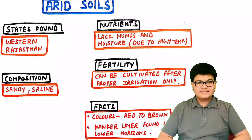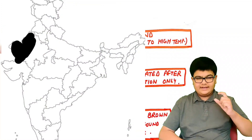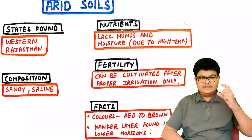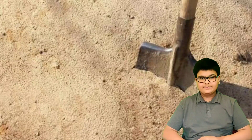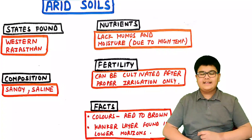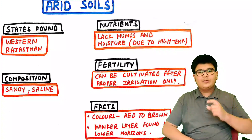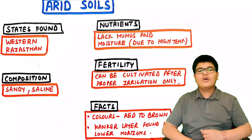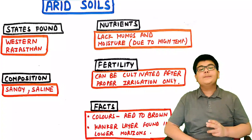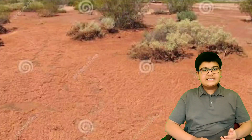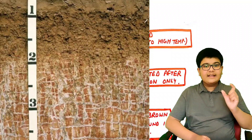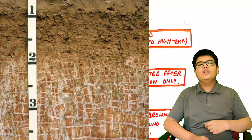Arid soils are found in the region of Western Rajasthan. Their composition is very sandy due to the presence of sand dunes. A large amount of salt is present, making them highly saline. Due to the high rate of evaporation, they lack humus and moisture and can be cultivated only after proper irrigation. They come in colors such as red and brown, and a kankar layer is also present in the lower horizons.